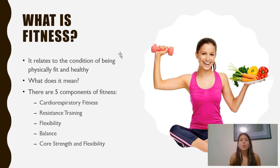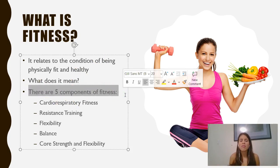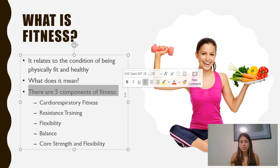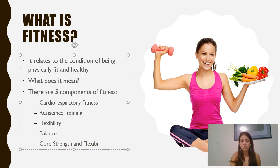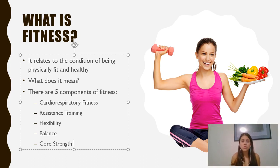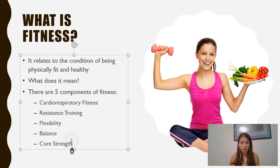When we talk about a physically fit body, we talk about the five components of fitness: cardiorespiratory fitness, resistance training, flexibility, balance, and core strength. Sometimes we also see it as cardiorespiratory fitness, muscular strength, muscular endurance, flexibility, balance, and body composition. We're going to focus on what the reading covers — these five components.